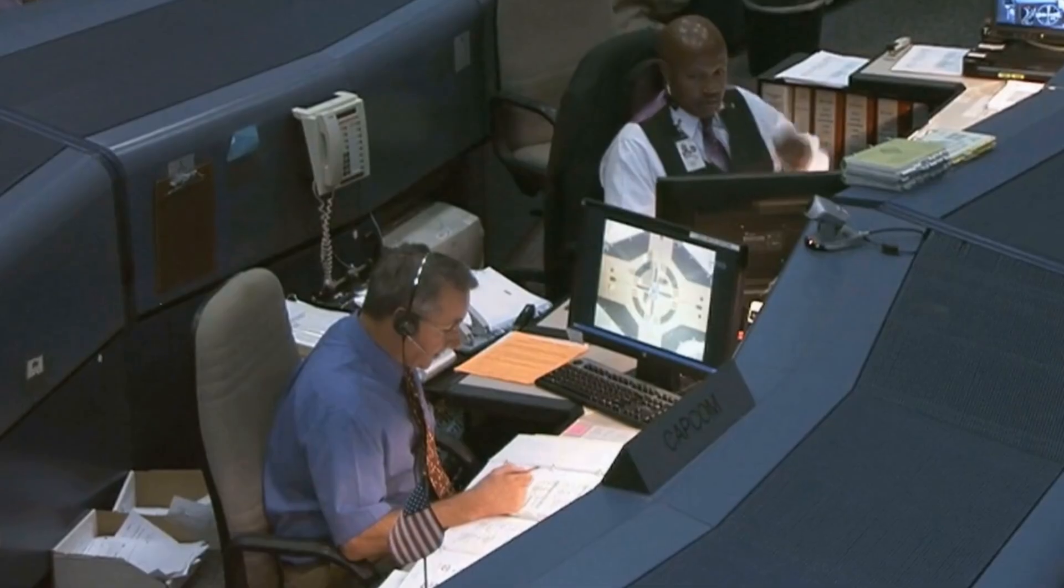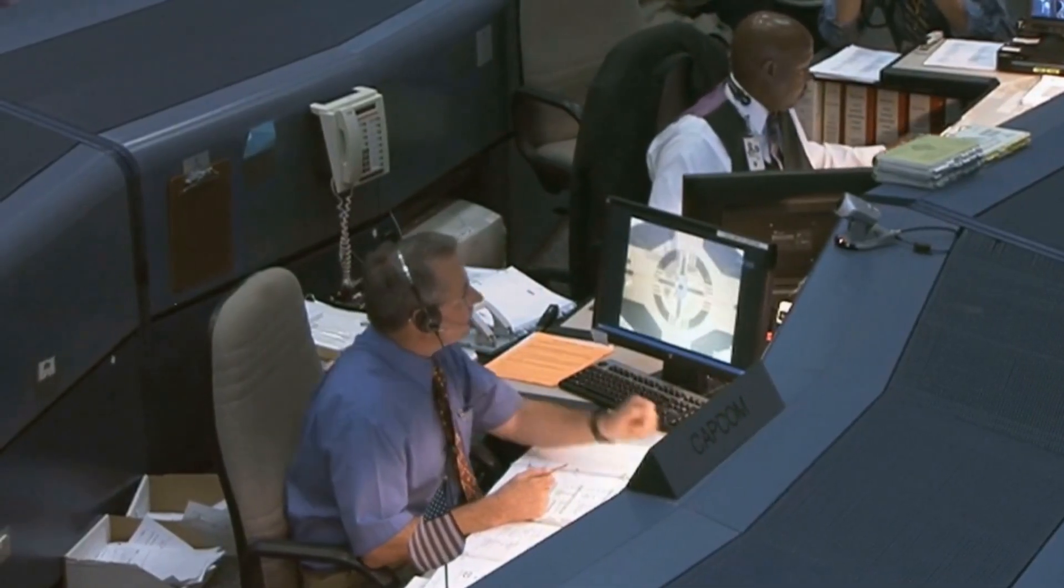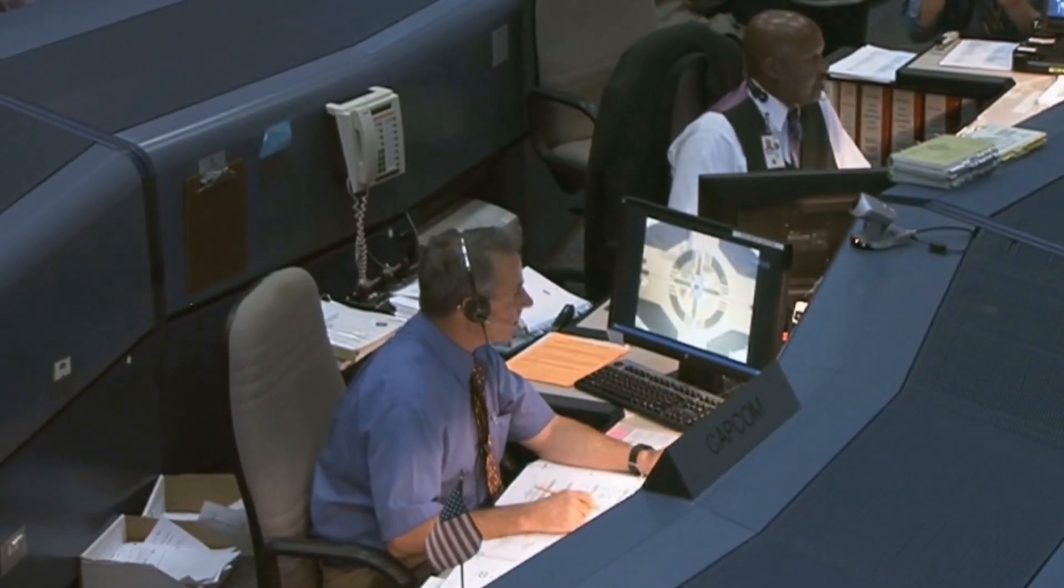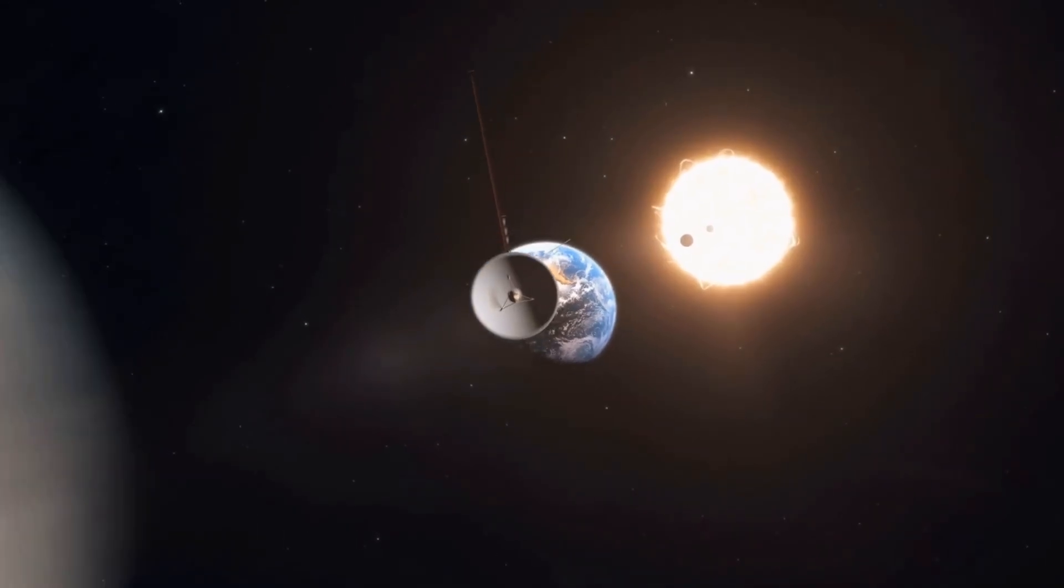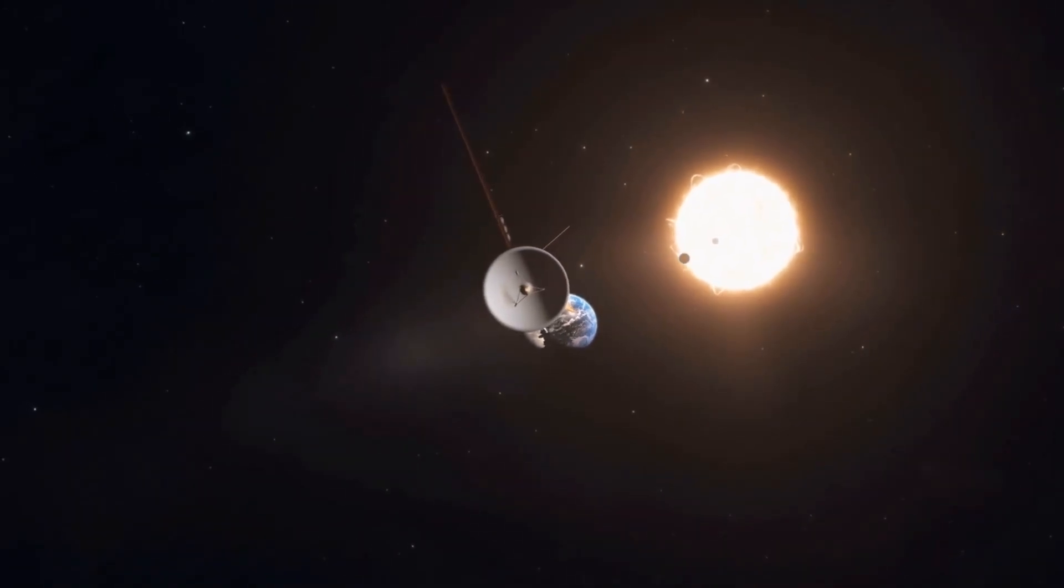In 1990, long after its final planetary flyby, Voyager 1 began a new phase, the Voyager Interstellar Mission. Its goal? To explore the outermost boundary of our Sun's domain, the heliosphere, and beyond.